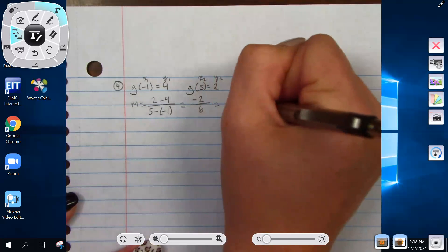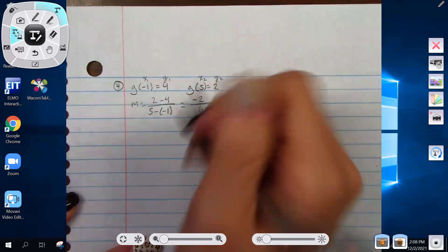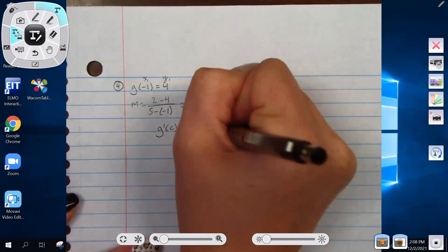Negative two over six simplifies to negative one third. So our answer then: g'(c) equals negative one third.